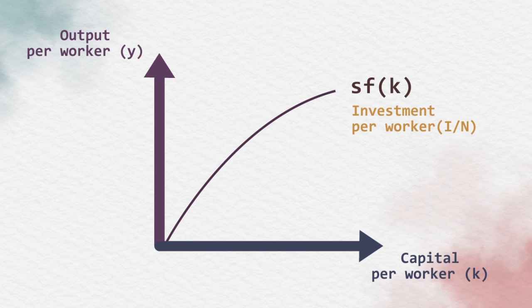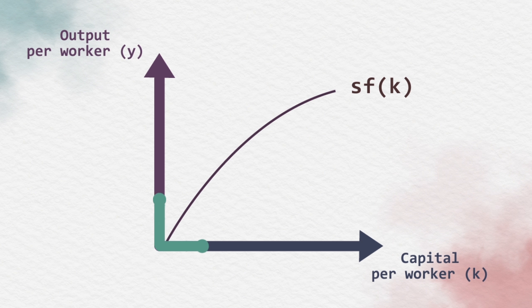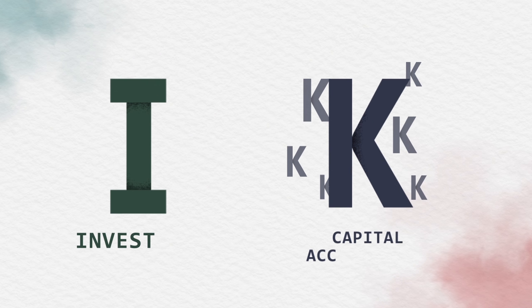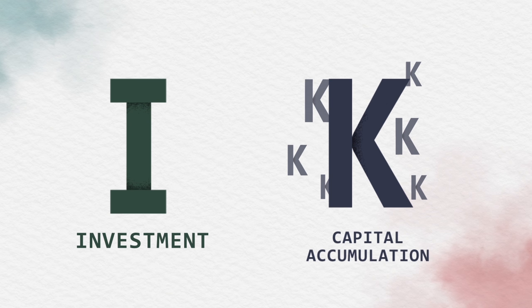According to the law of diminishing returns, we can imply that the first unit of capital per worker will get high productivity and lead to an increase in investment. If they increase larger and larger units of capital, they will get smaller output and investment. The second step is investment and capital accumulation.